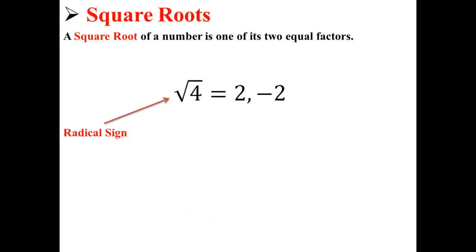Square roots can be written like this under a radical sign. So the square root of 4 is equal to either 2 or negative 2.